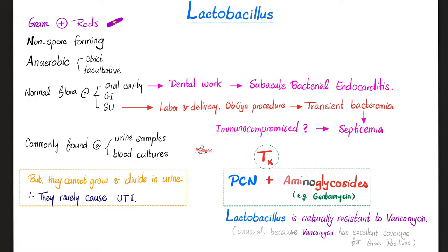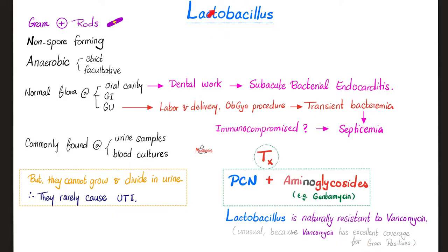Lactobacilli rarely cause UTIs because they cannot grow and multiply in the urine. Diagnosis is made by Gram stain, microscopy, and culture. In cases of endocarditis, three separate blood cultures should be ordered. Treatment is penicillin and gentamicin, or any other aminoglycoside.